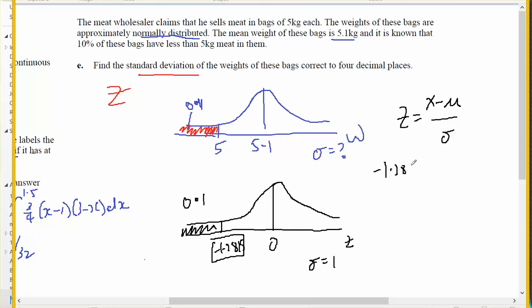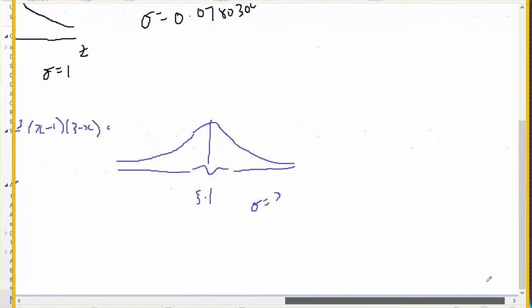So negative 1.28155 should equal X, which is 5, minus the mean, which is 5.1, over the standard deviation, which is what I'm looking for. So I might take that into a new line. I'll make it equal to 5 minus 5.1 divided by X and then solve for X. Which gives me a standard deviation of 0.0780304, which is 0.0780.